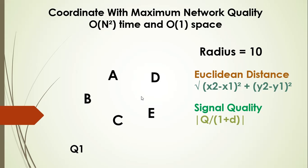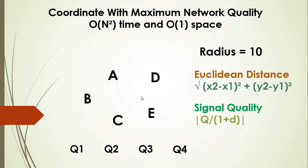Similarly, for the second tower B, you calculate quality and distance parameters for all remaining towers from point B and get quality parameter Q2. You do the same for tower C to get Q3, tower D to get Q4, and tower E to get Q5. You then find the maximum among Q1 through Q5 — that will be your best coordinate, which you return as your answer.